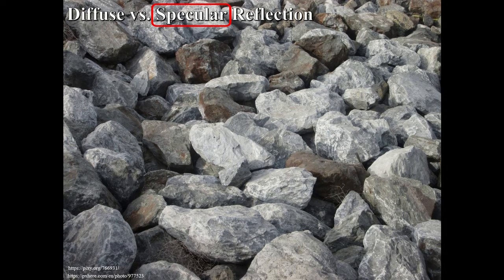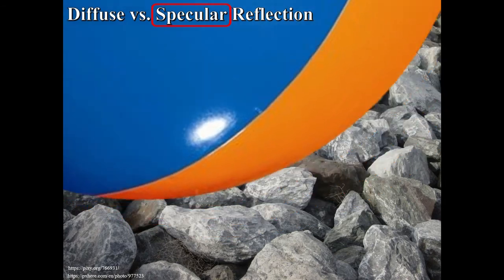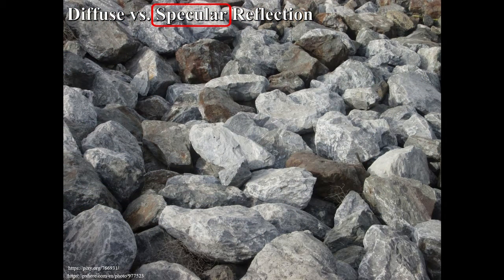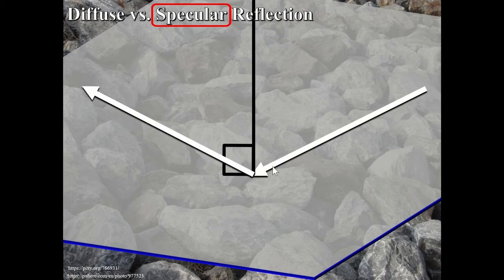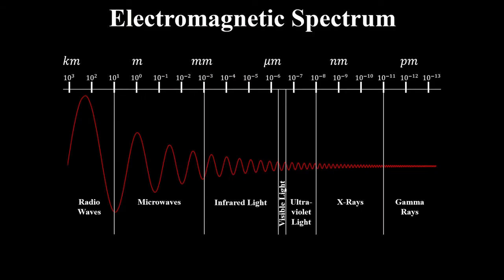But could I get specular reflection with a rough surface? It can happen if I threw a much, much larger object at it. The irregularities in the surface were very small in comparison to the size of the object being thrown. That big object would smooth out all those irregularities, and it would just be angle of incidence equals angle of reflection across the whole surface.